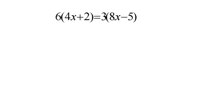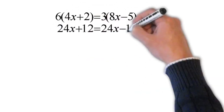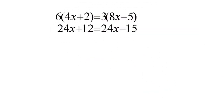Now let's look at a problem with distributive property that has a twist to it. We've got 6 times 4x plus 6 times 2 equals 3 times 8x minus 3 times 5. That gives us 6 times 4x, which is 24x, plus 6 times 2, which is 12. And then 3 times 8 is 24x, and 3 times negative 5 is negative 15.